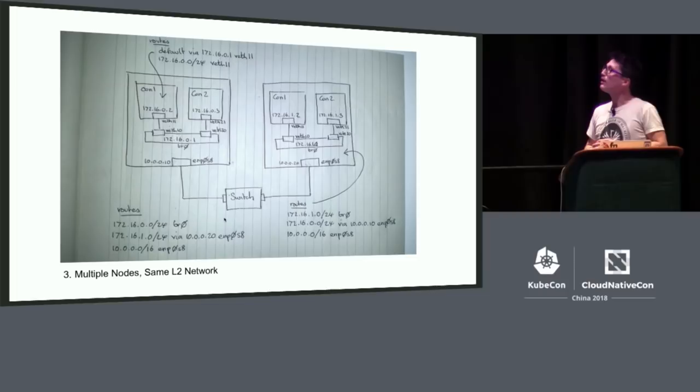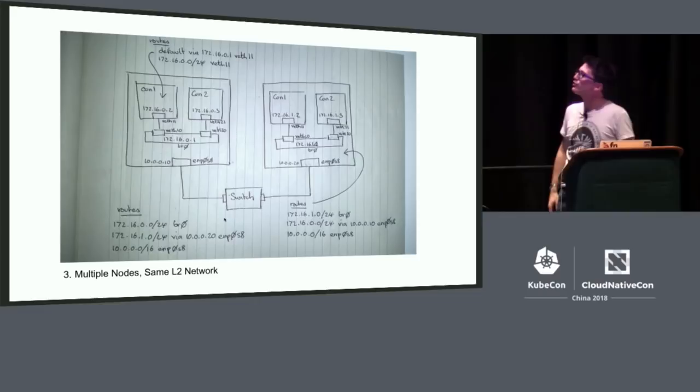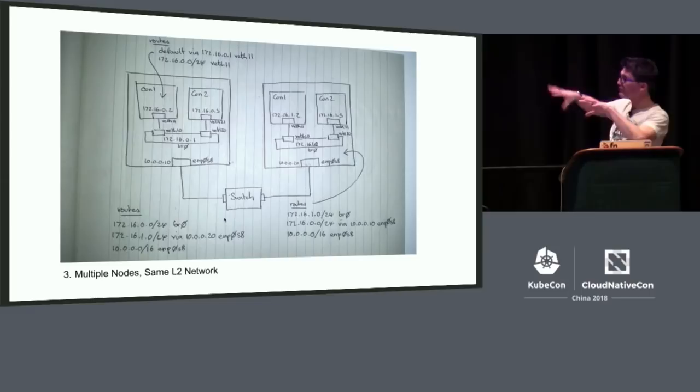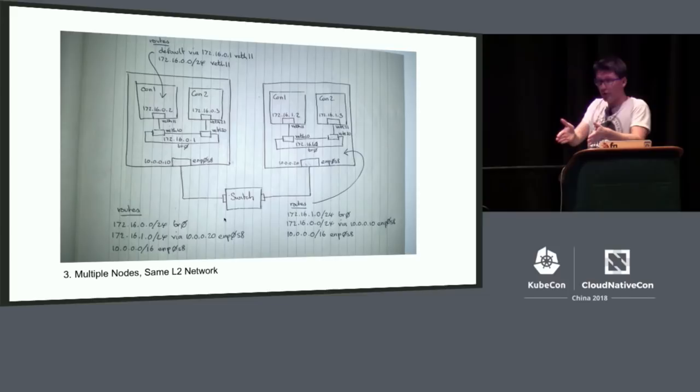If you have more than one node, you'd have an entry per node, so you might end up with big routing tables. You'll need some way to manage that — some way to store the range of IPs on one node to the node itself. That could be etcd or somewhere else. We'll get to that a bit later.